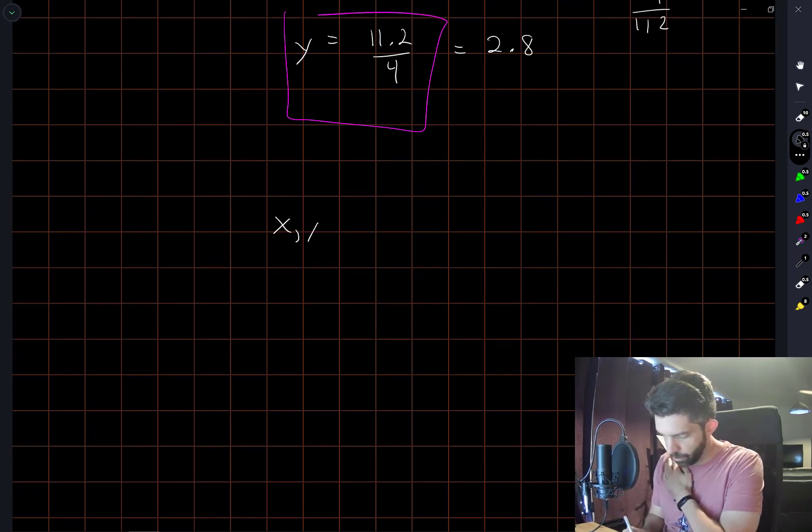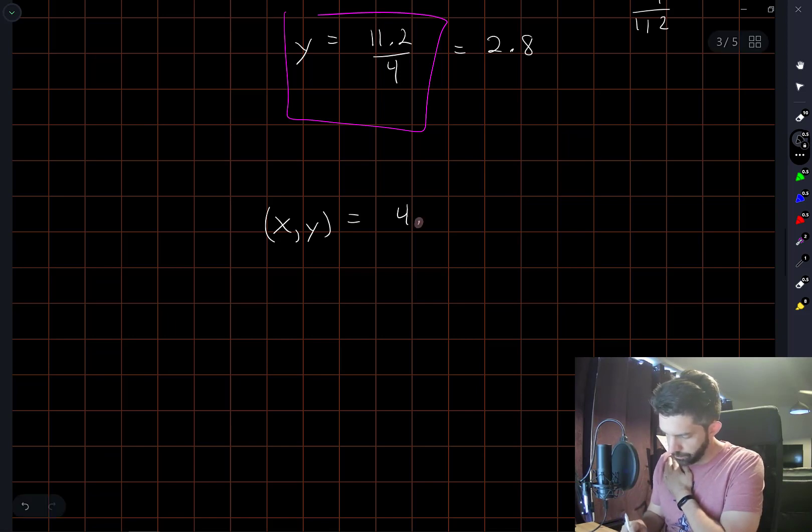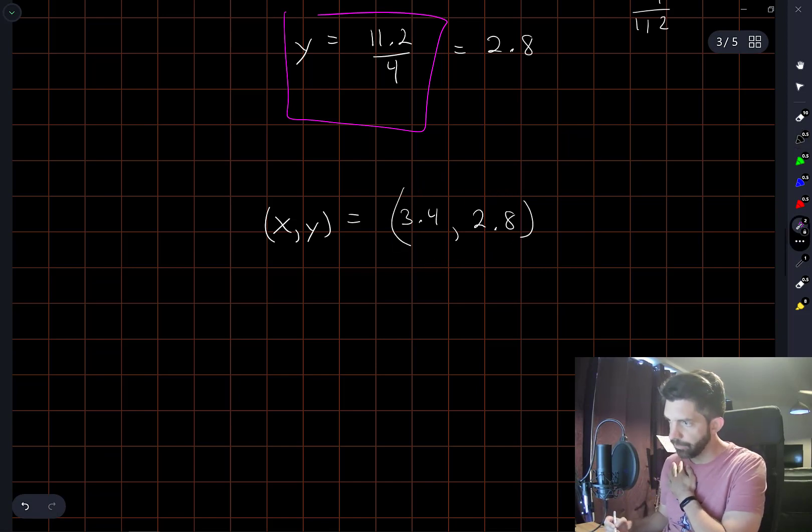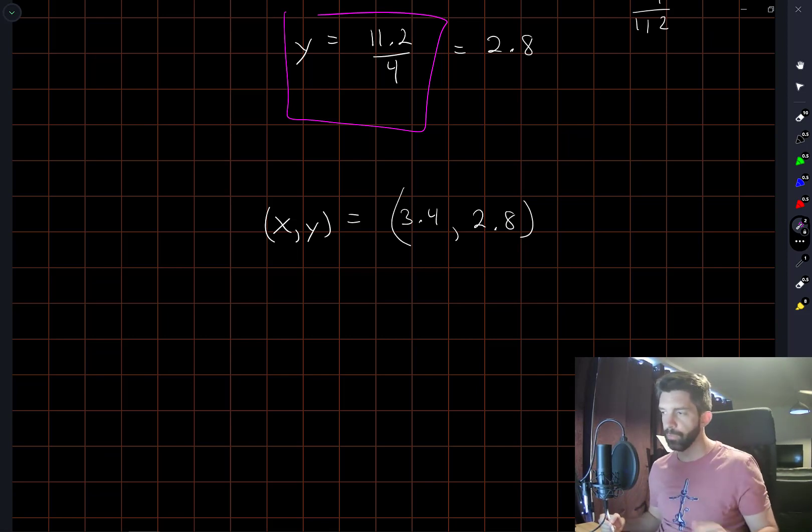So the point we're looking for (x, y) is the first option, (3.4, 2.8). This point lies on the circle with radius 2. And it's the point which is closest to the other circle with radius 1. Yeah, fairly straightforward in the end.